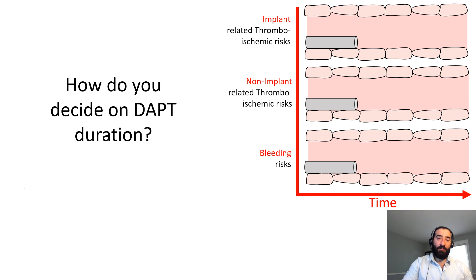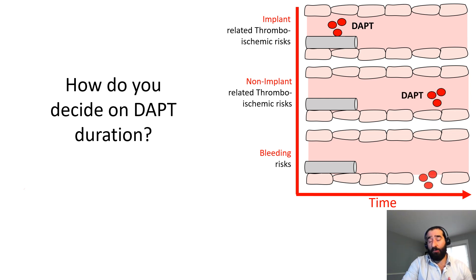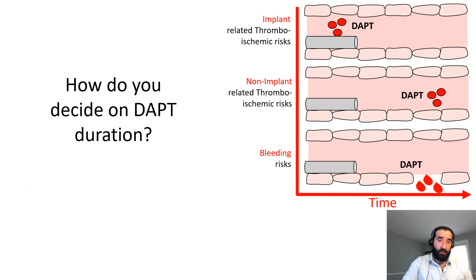How do you decide on DAPT duration? To do that, you need to look at three main risks: ischemic events related to the implant that might lead to stent thrombosis; ischemic events unrelated to the implant that might cause blockage in the vasculature; and if the patient is on DAPT, they will be unable to optimally stop bleeding, which will have clinical consequences.